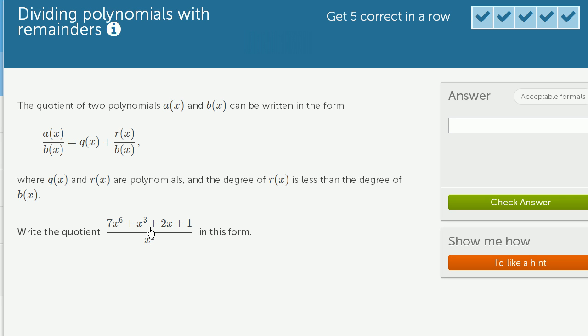Well, this one is pretty straightforward because we're dividing by x squared. So you could literally view this as 7x to the sixth divided by x squared plus x to the third divided by x squared plus 2x divided by x squared plus 1 divided by x squared. So we could just do this term by term.